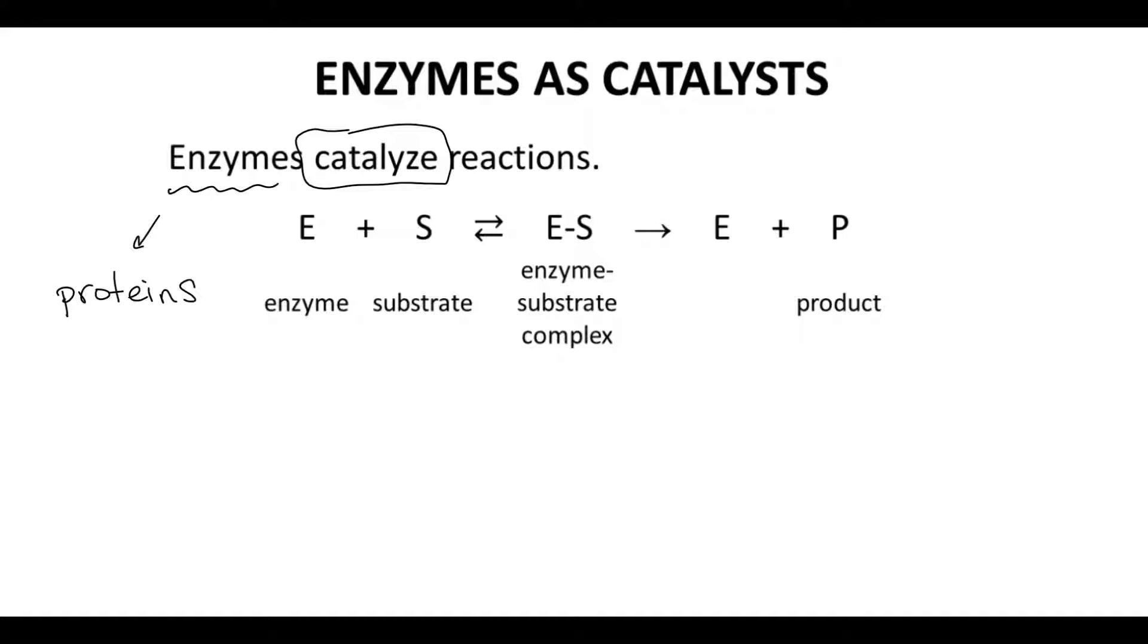The starting material is called a substrate, S. The product is called P. Enzymes bind a molecule of the substrate at the active site of the enzyme to make an enzyme-substrate complex in the middle of the screen. A reaction then occurs to form the product, which is immediately released from the enzyme. The enzyme can then find another substrate molecule and repeat the process.